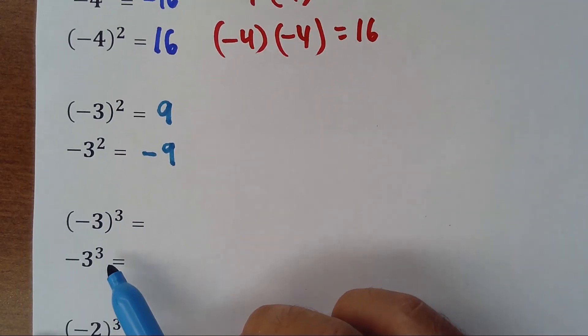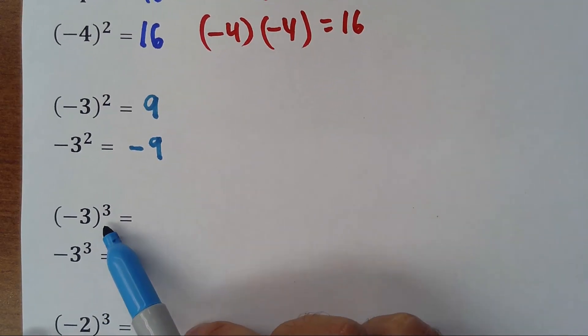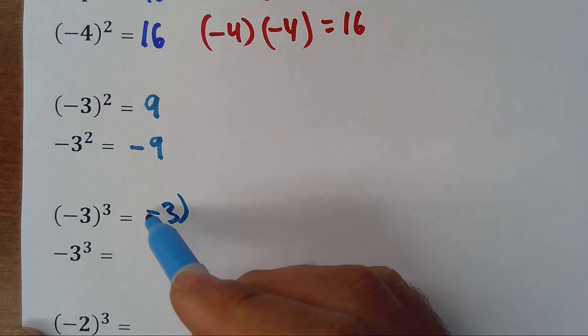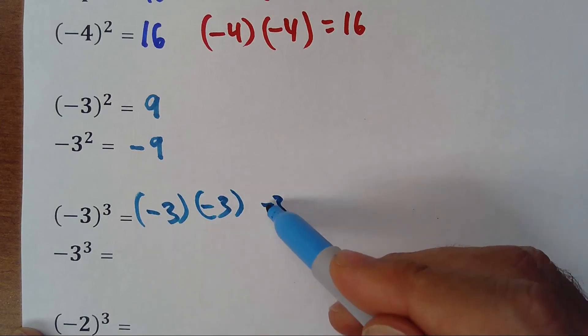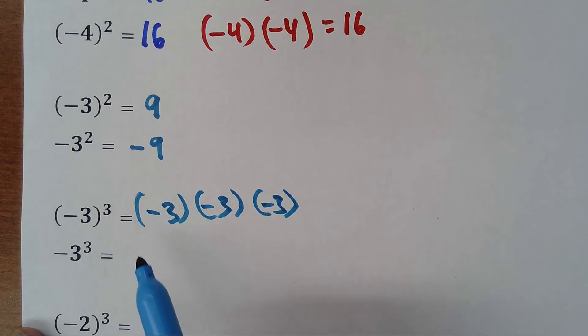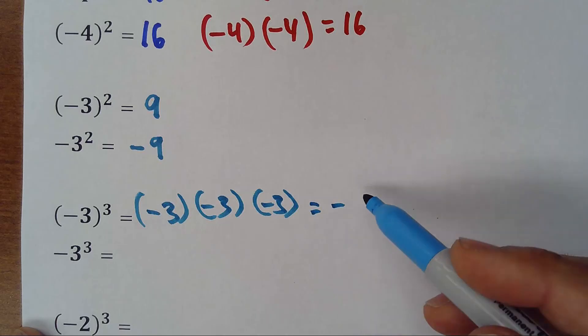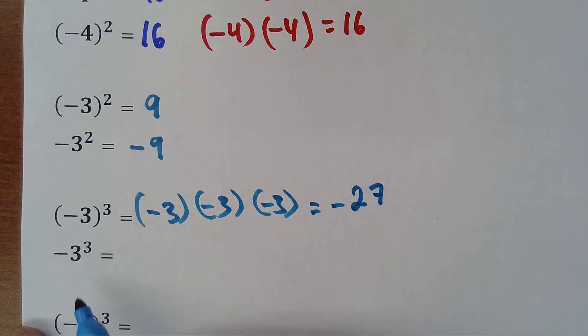Now, let's check now what happens when the exponent is an odd number. Negative 3 raised to the third means negative 3 times negative 3 times negative 3. That would be minus times minus is plus, plus times minus is minus. The answer is negative 27.